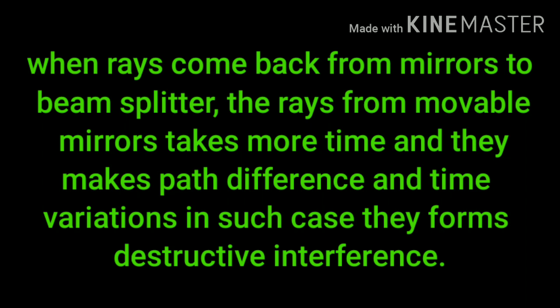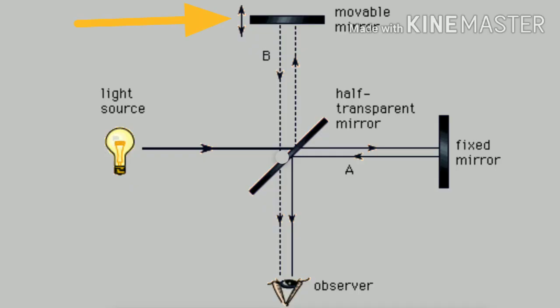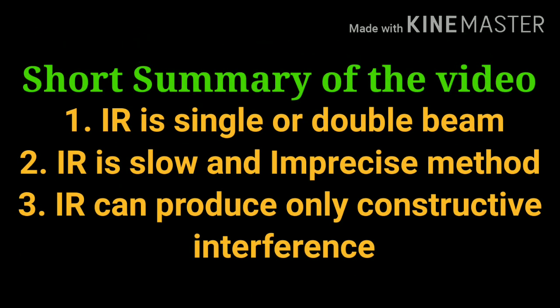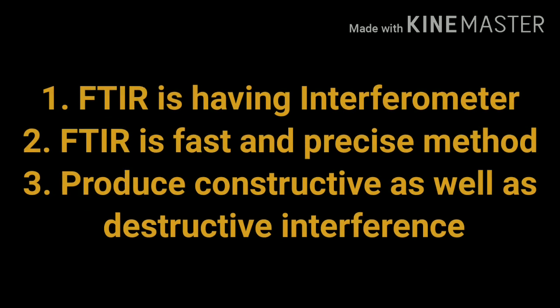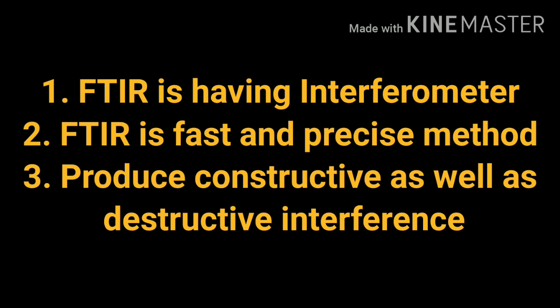I hope you understand the difference between constructive and destructive interference. As shown in the representation, the movable mirror is marked. Here is a short summary: IR is a single or double beam instrument; IR is a slow and imprecise method; and IR can produce only constructive interference. While FTIR has an interferometer; FTIR is a fast and precise method; and FTIR can produce both constructive and destructive interference.